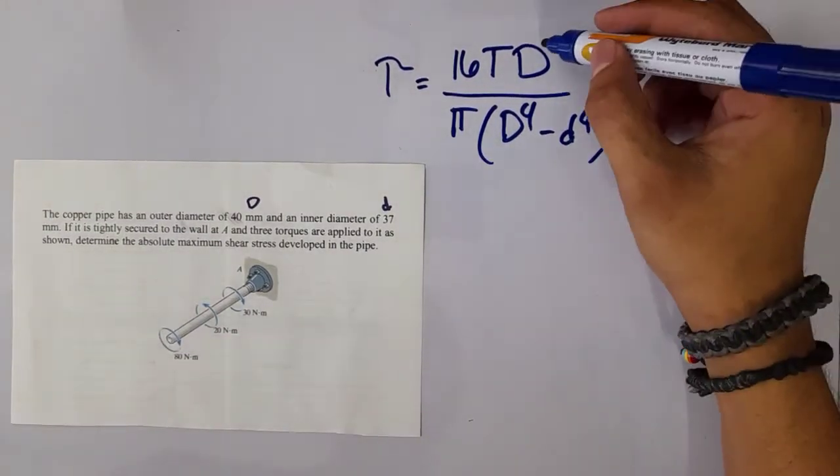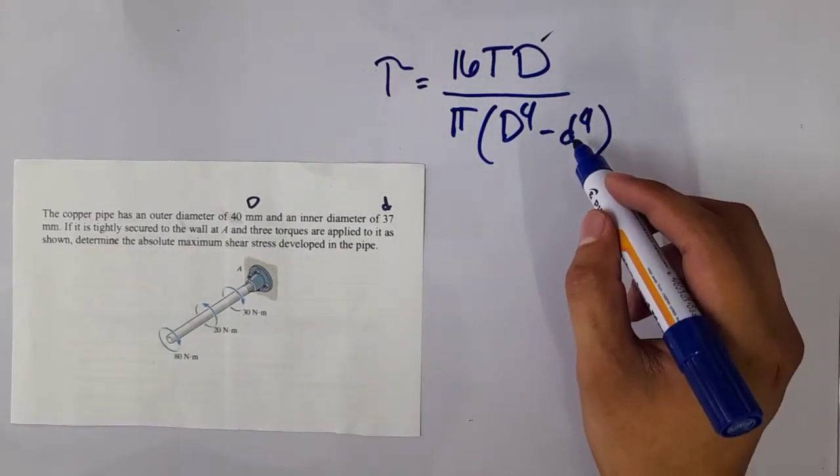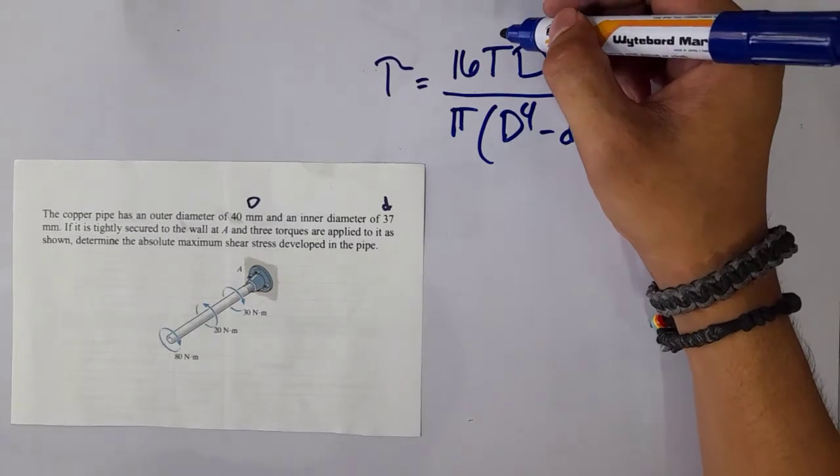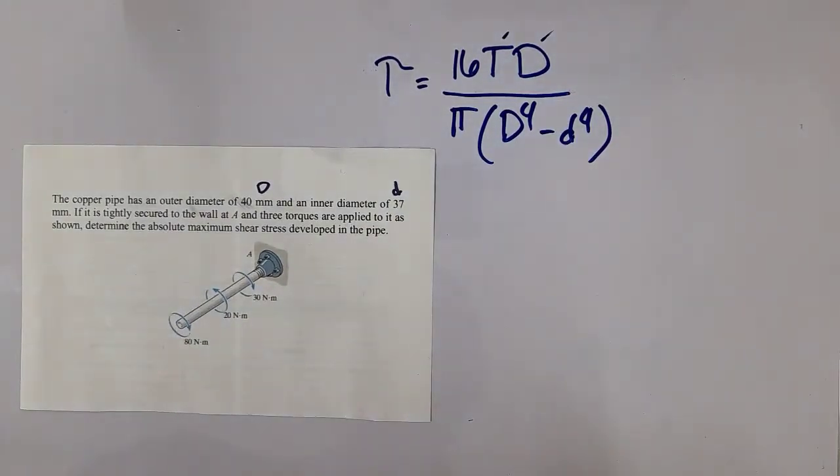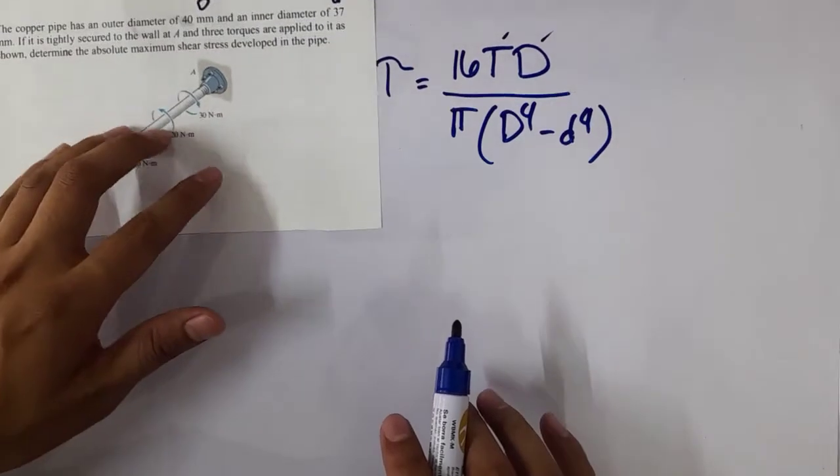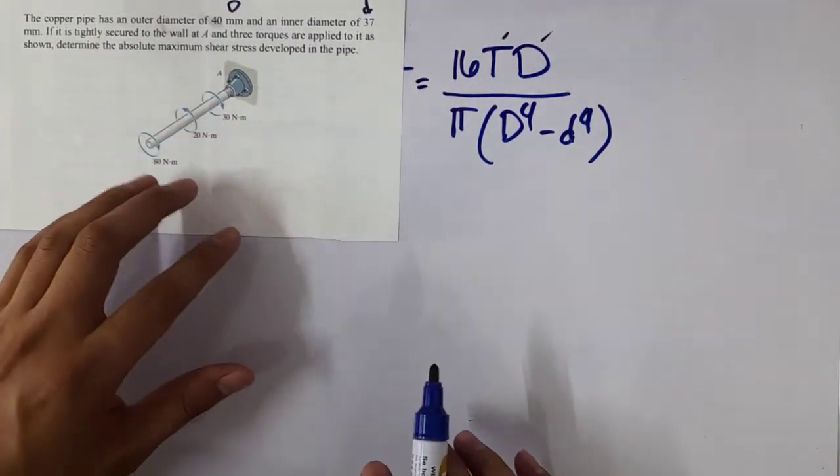We're given the diameter, which is 40, this is 37, but what we lack now is the torque. Since we're going to find the maximum shearing stress, we're also going to find the maximum torque in the copper pipe.